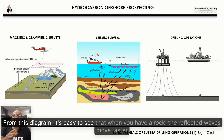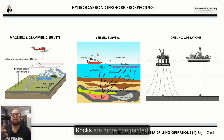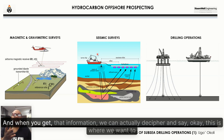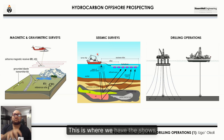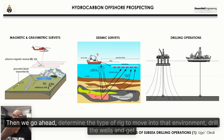From the diagram, when you have rock the reflected waves move faster, whereas when you have oil and gas the reflected waves move slower — because rocks are more compacted and reflect sound quicker to the hydrophones. From that information we can decipher where we want to prospect, where the shows are, and where we should be drilling. After all that study has been done, the information is passed to the drill engineers, who then determine the type of rig required, move into that environment, drill the wells, and get the hydrocarbons to surface.